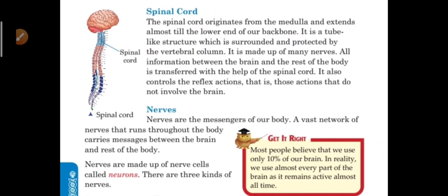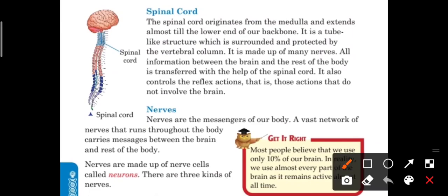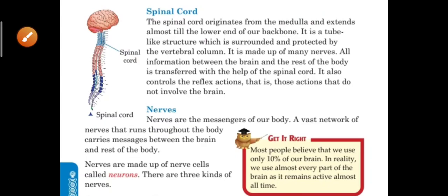Let's start with your book page number 46 — the spinal cord. The spinal cord originates from the medulla and extends almost till the lower end of our backbone. The medulla part of our brain extends to the lower backbone, where our backbone is — there is the spinal cord. It is a tubular structure which is surrounded and protected by the vertebral column.